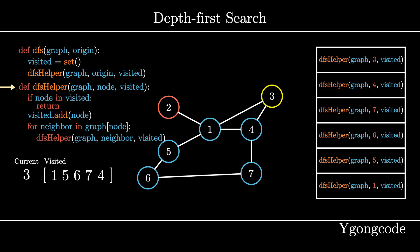At dfsHelper 3, since node 3 has not been visited, we add it to our visited set and pick a neighbor.